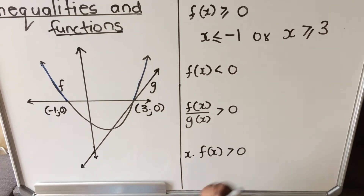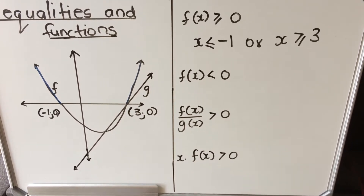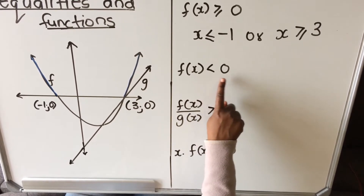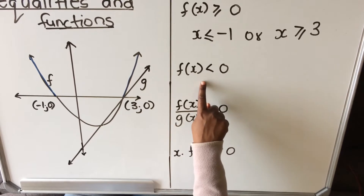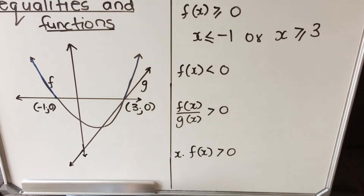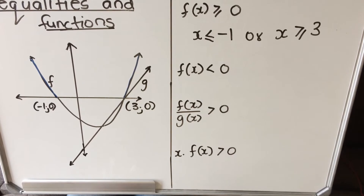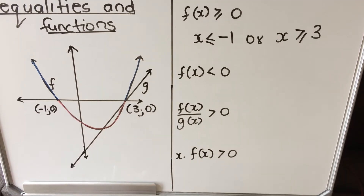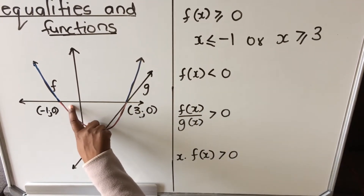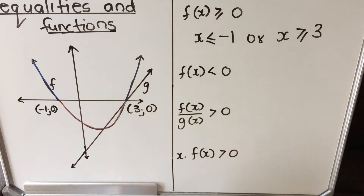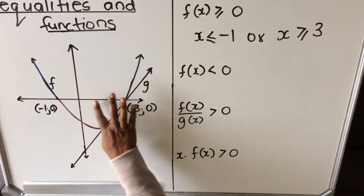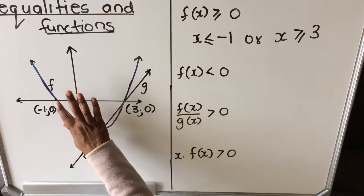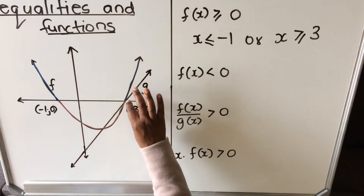Let's look at the second one. The second one asks where the function is less than zero — meaning where is the function negative, where is the function below the x-axis. My function is below the x-axis here. Which values? From minus 1 to 3, my function is below the x-axis. All these x-values here are below.